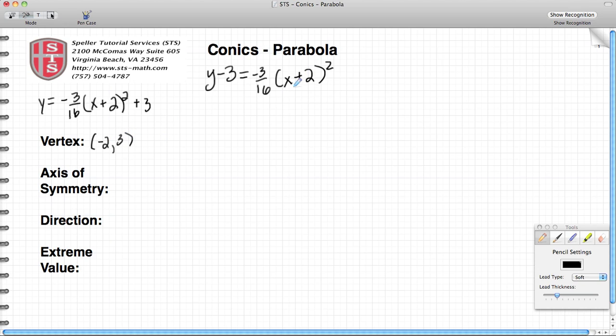Axis of symmetry in this case for this function is the x value that we see here: x is equal to negative 2. The reason we know that is because the x value is being squared, so we know the axis of symmetry is going to match the x value that we see in our vertex.